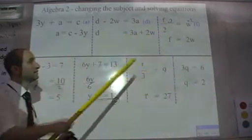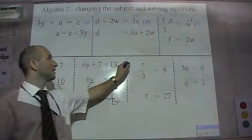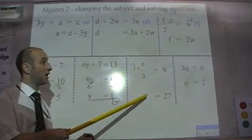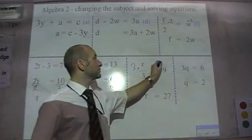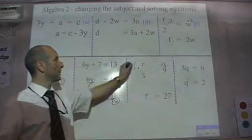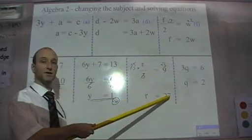This equation here, R divided by 3 is 9. If I multiply this side by 3, 3 times R divided by 3 is just R. I must multiply this side by 3. The 3s cancel, leaving me just R. 3 times 9 is 27.